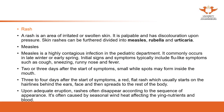The second type is rashes. A rash is an area of irritated or swollen skin. It is palpable — you can feel it if you touch the skin — and it has discoloration upon pressure. Rashes can be further divided into measles, rubella, and urticaria. Most of these we don't treat with acupuncture, but when you see them you need to recognize them.